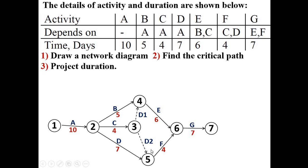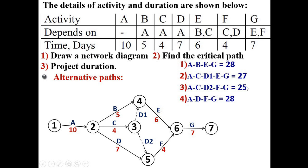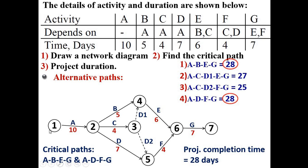Dummy activity does not consume any resources or time, and is always indicated with a dotted line. At the end, E and F merge at node 6, then G starts. Now finding the critical path — listing all alternative paths: A-B-E-G, A-C-D1-E-G (D1 is dummy, so no time), A-C-D2-F-G, and A-D-F-G. Summing the times for each path, there is a tie at two places, so both are called critical paths: A-B-E-G and A-D-F-G. The project completion time is 28 days — the minimum time required to complete the project.